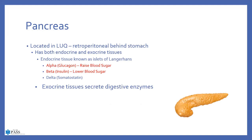The pancreas is in the left upper quadrant in the retroperitoneal area behind the stomach. It has both endocrine and exocrine tissues. The endocrine tissues come from the islets of Langerhans — alpha cells produce glucagon to raise blood sugar, and beta cells produce insulin to lower blood sugar. The exocrine tissues secrete digestive enzymes directly to help break down food for proper peristalsis and digestion.